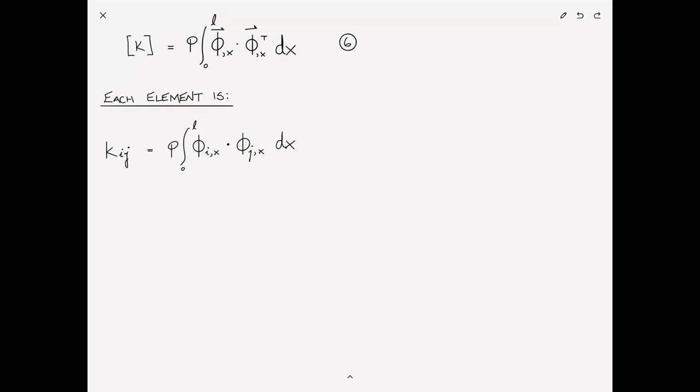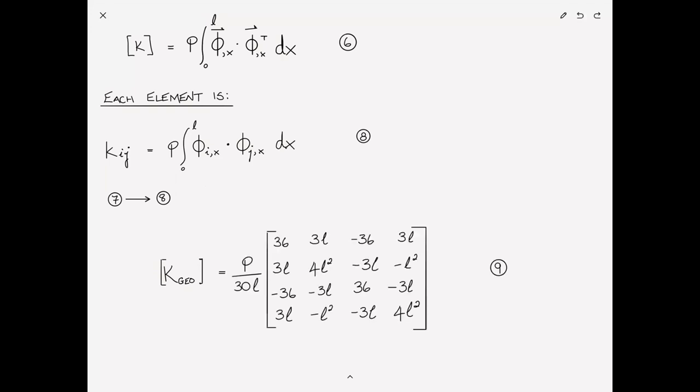And then substituting the shape functions one by one into equation eight, we can find the geometric stiffness matrix. And I'm just going to present it to you, we'll call that equation nine, and that is our solution. So what we have here is the geometric stiffness matrix for a beam with an axial load.